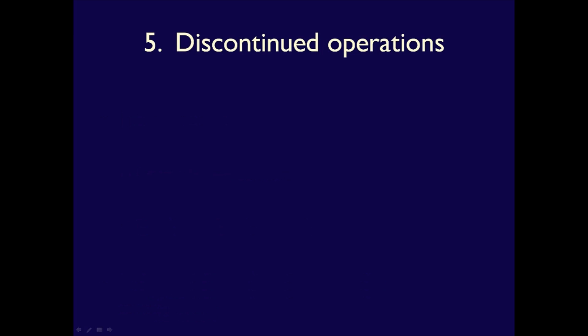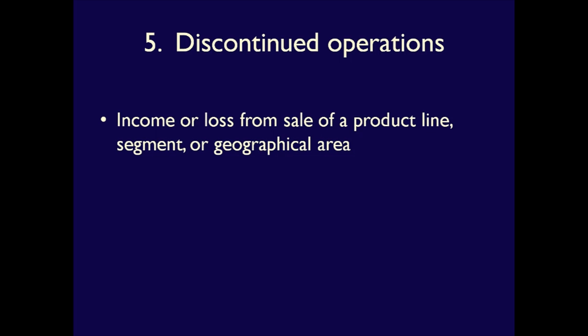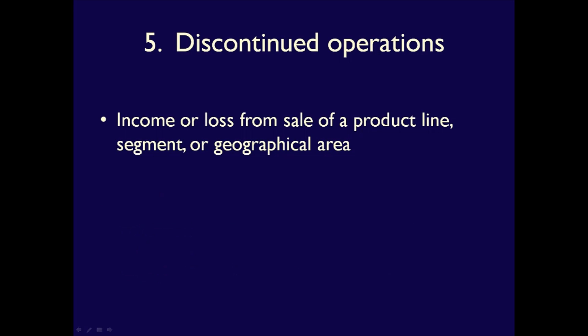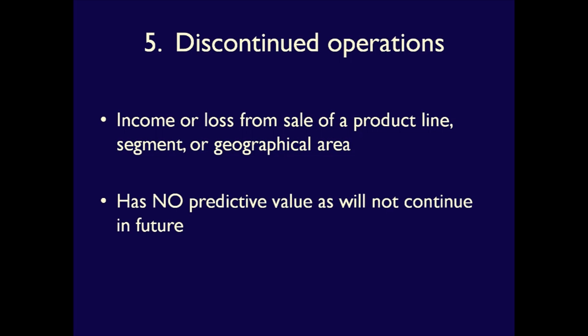Line item five is discontinued operations. There will be a separate video about this, but the basics are: this is when the business sells a major line, segment, or geographical area as a whole unit. This line item must include both the losses from the write-down of assets and liabilities being sold net of income tax refunds, and the profit or loss from operating that part of the business before it was discontinued, net of applicable income taxes. Discontinued operations are a separate line item because the information has no predictive value — this line of business will not continue into the future.